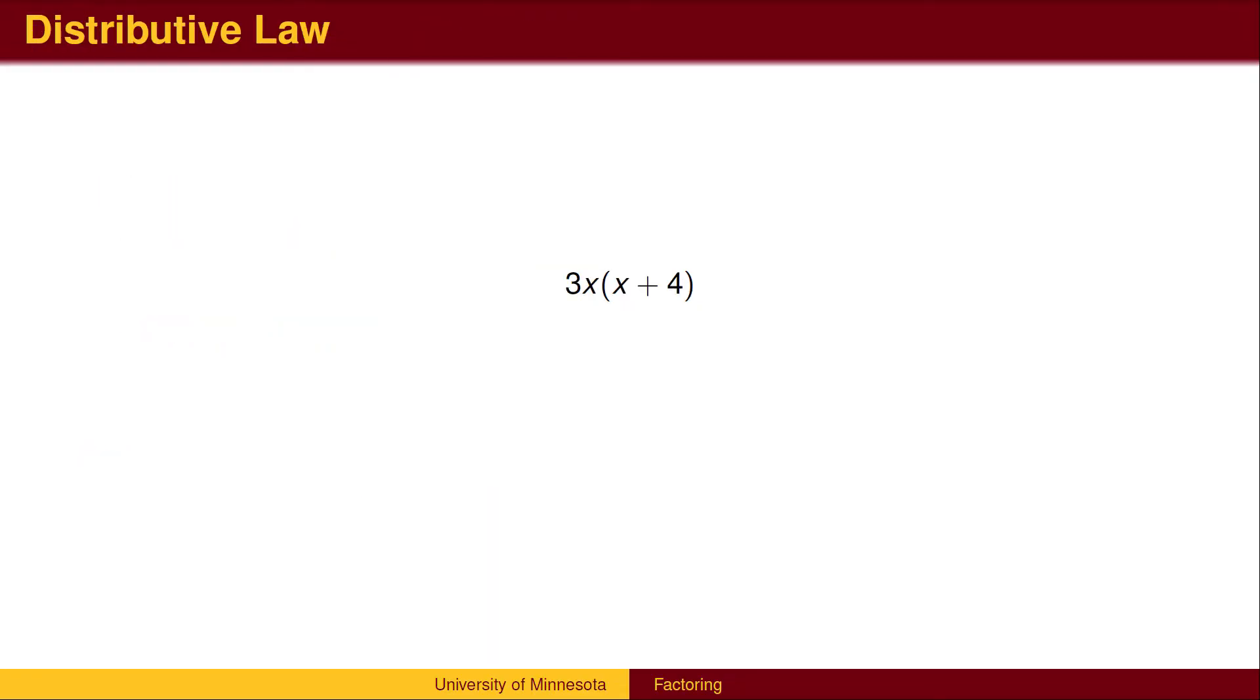First, the distributive law. In this example, the 3x is multiplied to both the x and the 4. 3x times x is 3x squared. 3x times 4 is 12x, giving the answer 3x squared plus 12x.